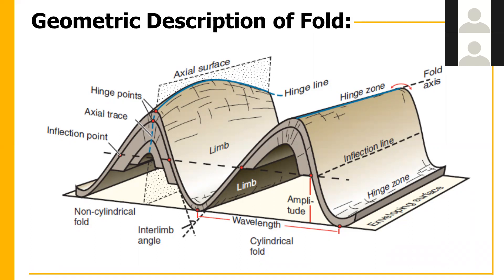Another term is wavelength. For those with a physics background, wavelength is the distance between two successive crests or two successive troughs. Amplitude is half of the distance from the inflection point to the inflection point. And one more term is interlimb angle.